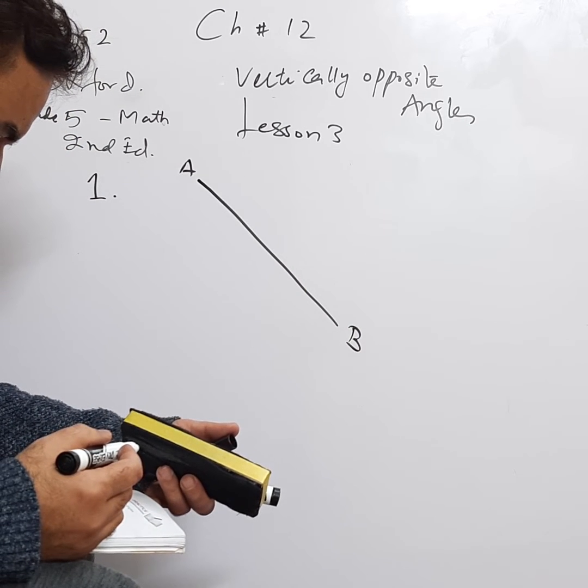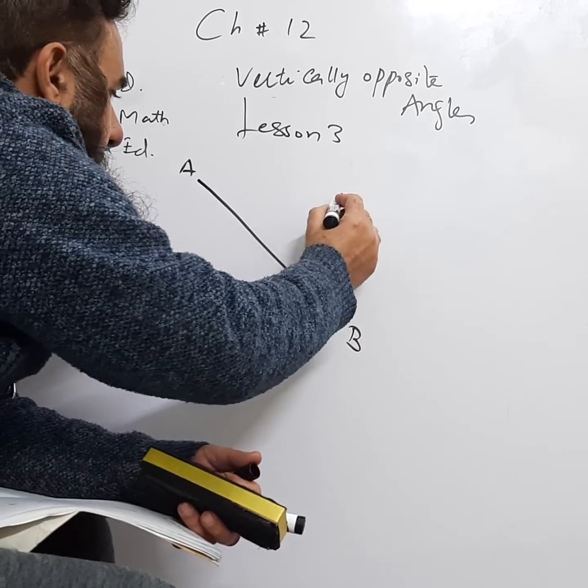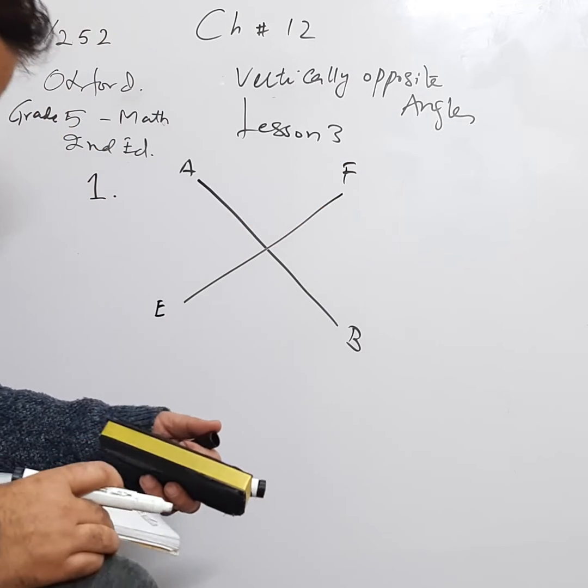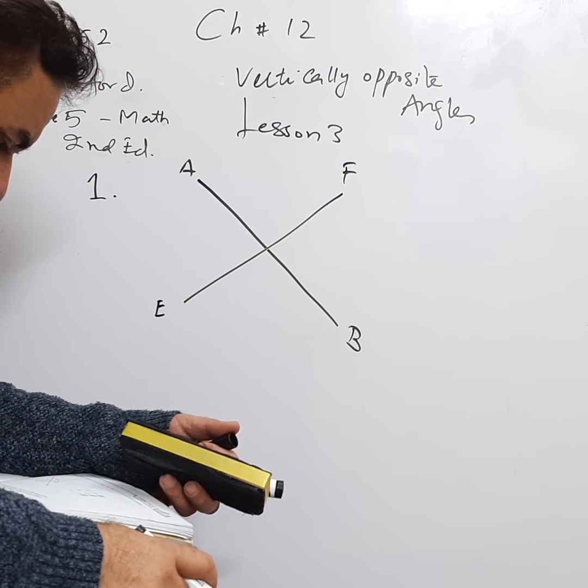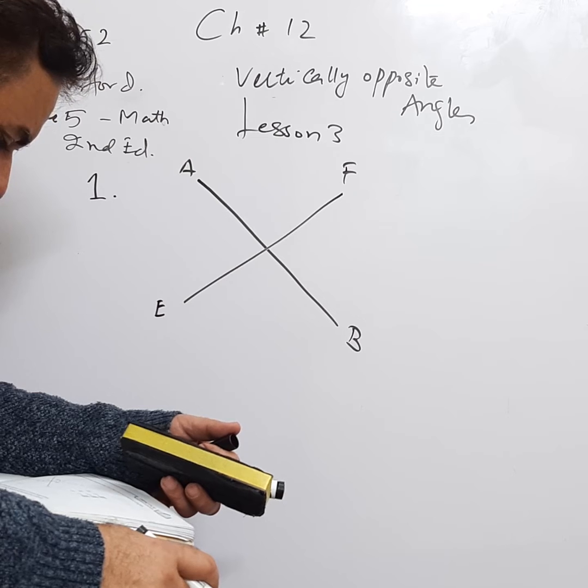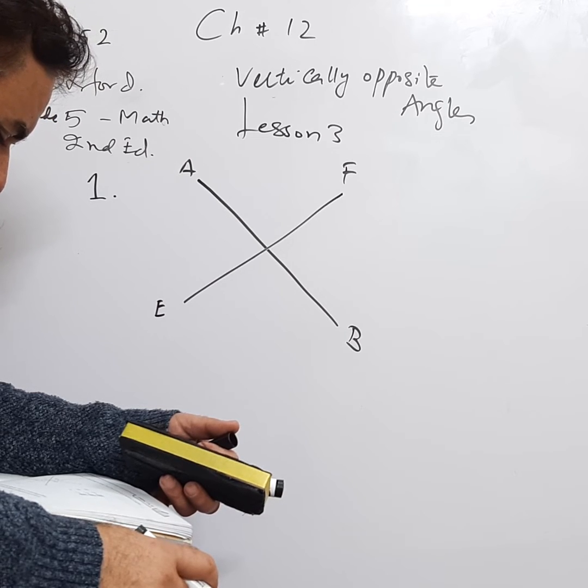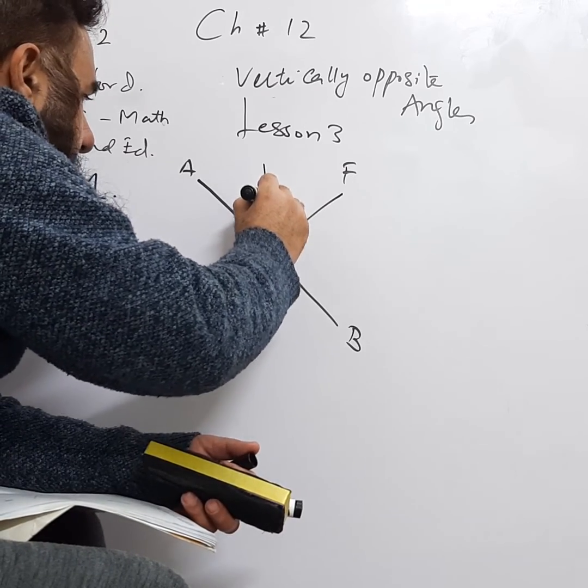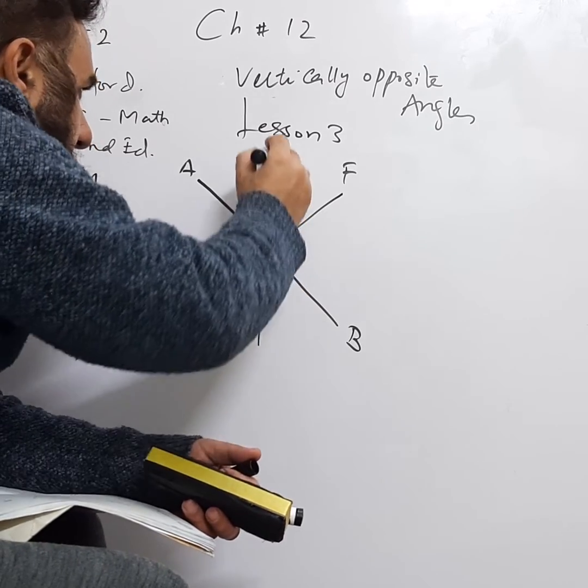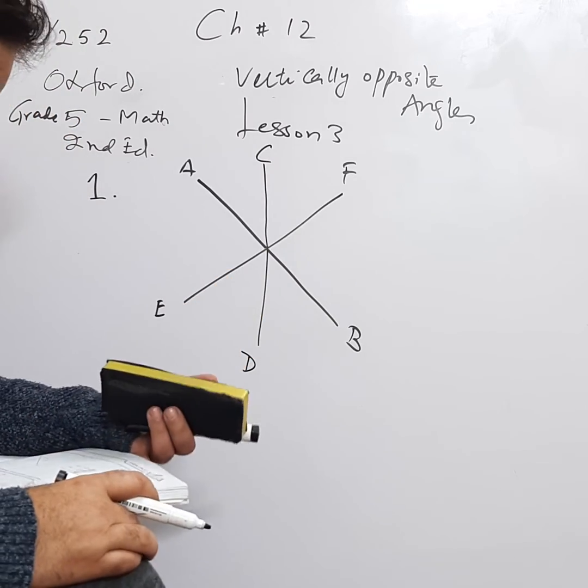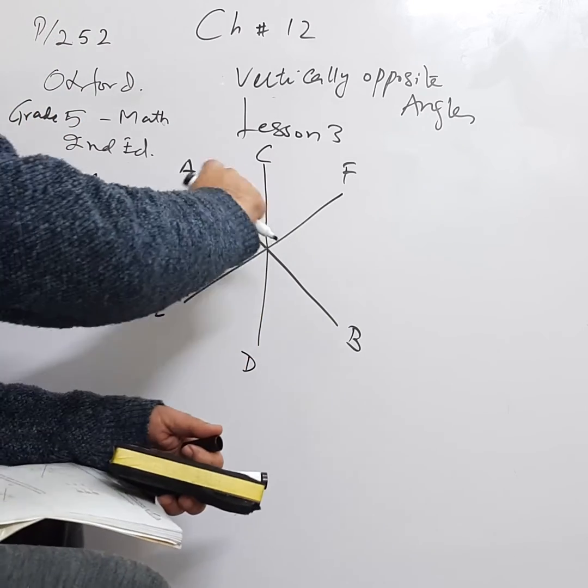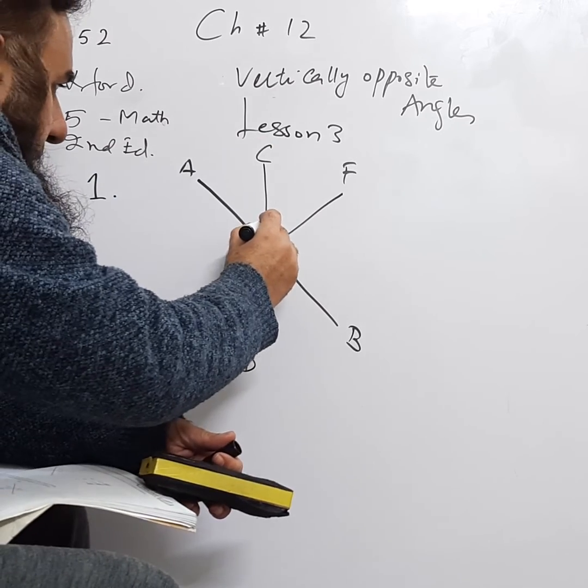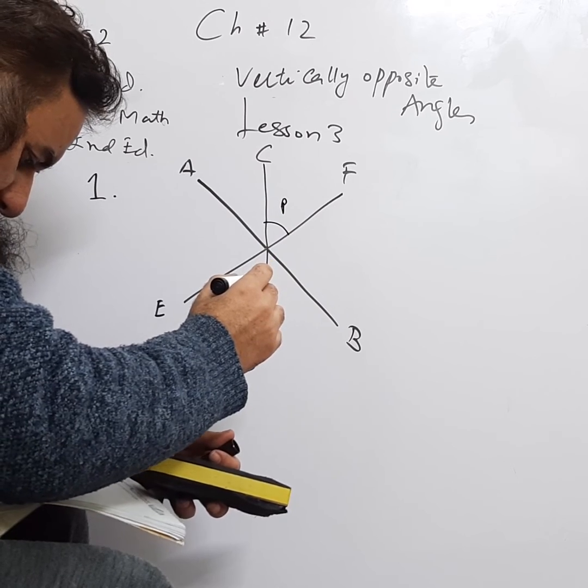And then there is EF, this is E, F, OK. And then there is CD, this is C and this is D. These three are straight lines, this, this, and this, OK. So they are saying this is P and this is 64.